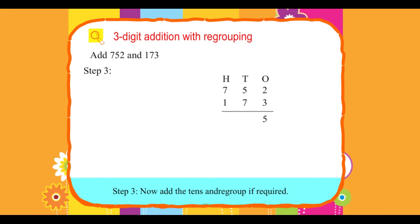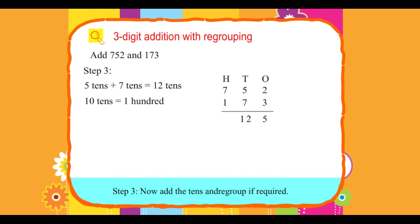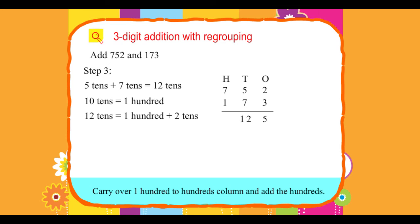Step 3: Now add the tens and regroup if required. 5 tens plus 7 tens equals 12 tens. Since 10 tens equals 100, therefore 12 tens equals 100 plus 2 tens. Carry over 100 to the hundreds column.